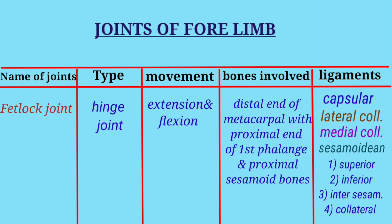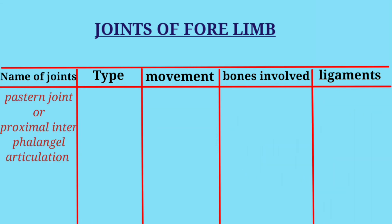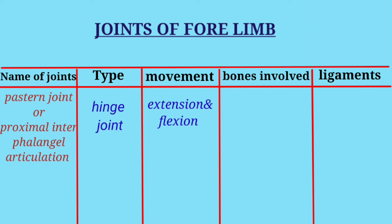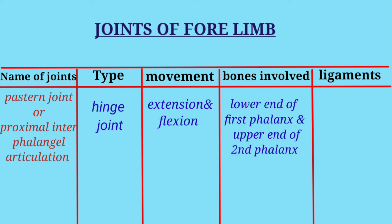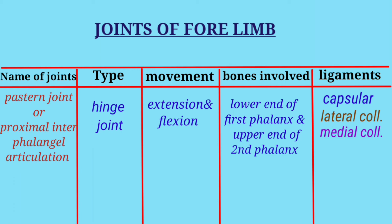Fifth is the pastern joint or proximal interphalangeal articulation. The type of joint is hinge joint and movement is extension and flexion. Bones involved are the lower end of the first phalanx and the upper end of the second phalanx. Ligaments are the capsular ligament, lateral collateral ligament, medial collateral ligament, posterior central ligament, posterior lateral ligament, and posterior median ligament.